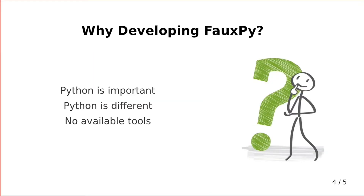Why did we decide to develop 4Py? Python is an important language because it's being used in so many areas — mostly in data science programs, deep learning programs, and even for back-end development using Django. Python is different from Java or C# because it's a dynamically typed language, and because of that it can easily become buggy. Also, there are no available tools that can do fault localization in Python programs, and we wanted to study what different techniques and families can perform on Python projects.